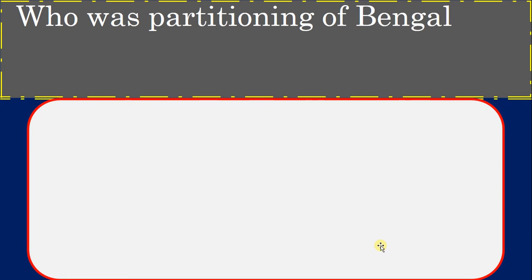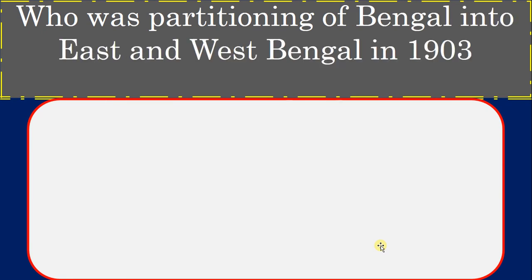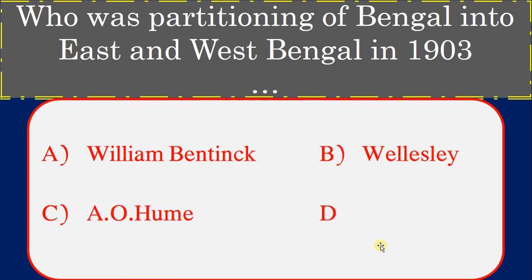Who partitioned Bengal into East and West Bengal in 1905? Options: William Bentinck, Wellesley, A.O. Hume, Curzon. Correct answer: Curzon.